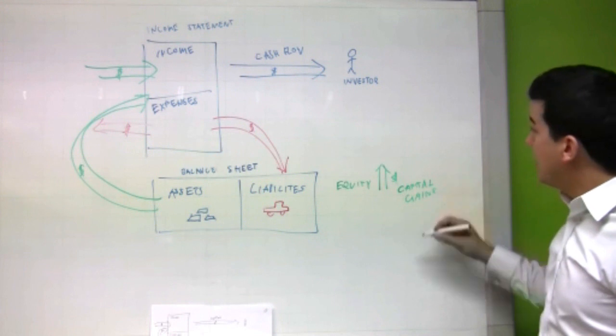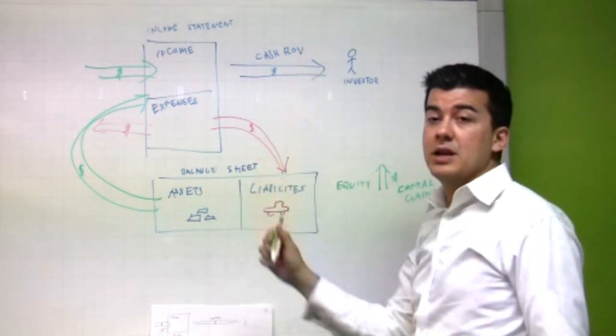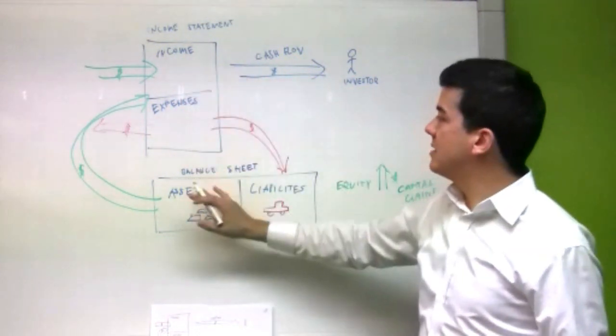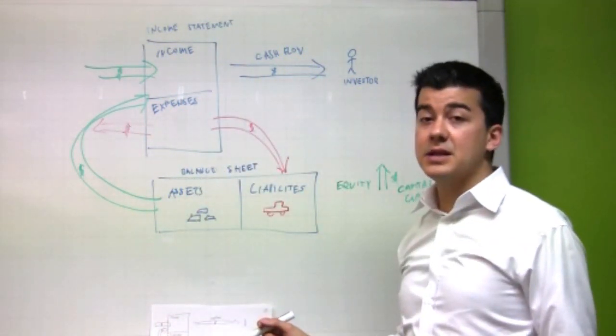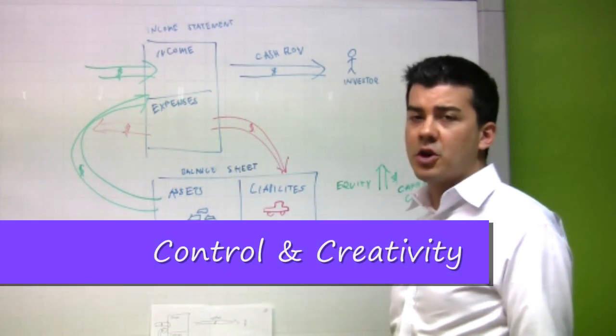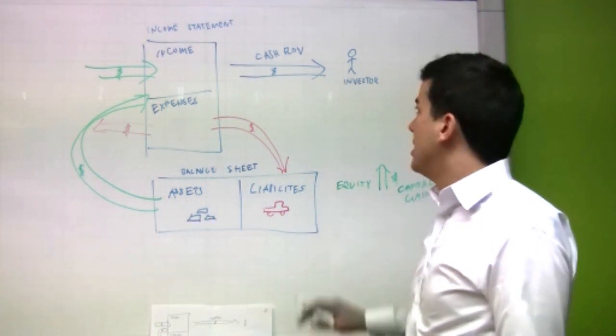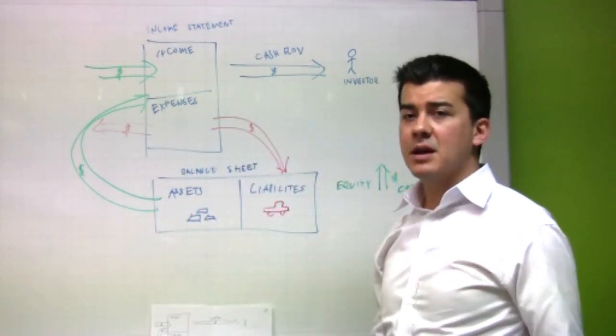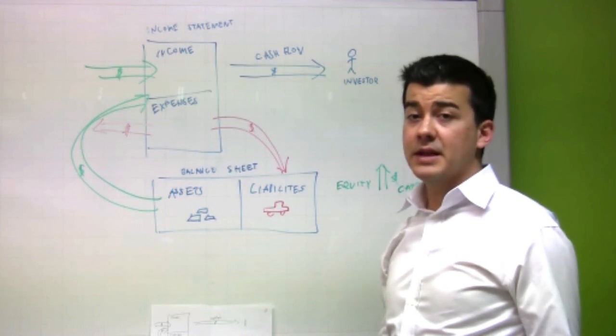So, that's how you can measure cash flow and capital gains. And an investor will always look at these things before they invest in a particular business. Now, let's talk about control and creativity. For an investor, there are different types of investments which may be more appealing than others.